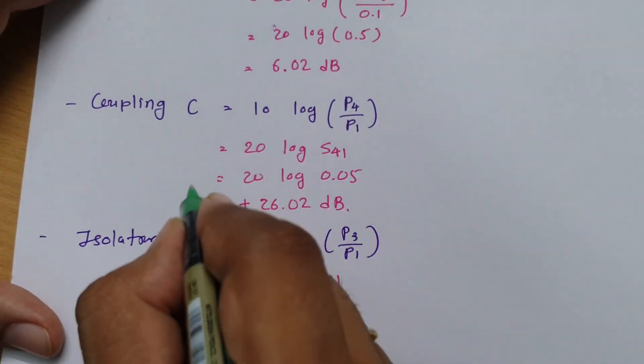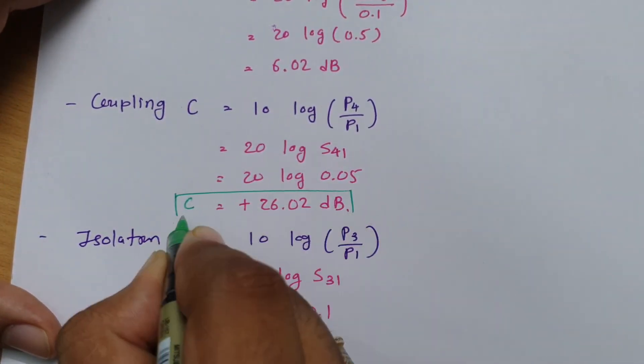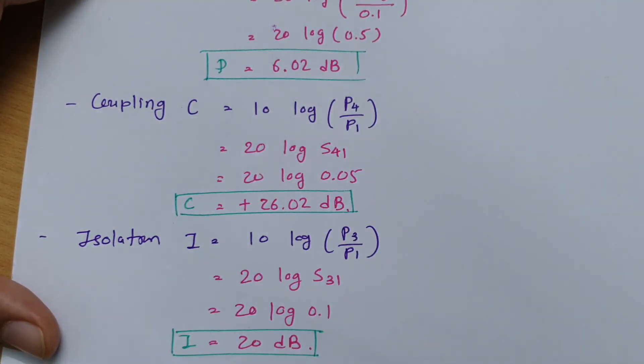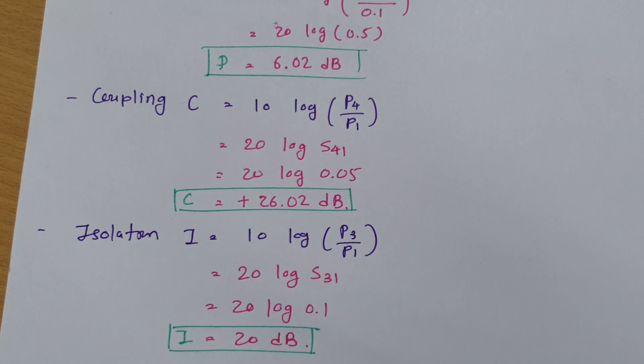So my isolation is 20 dB, my coupling is 26 dB, and directivity is 6 dB. This is how we can solve problems based on directional coupler. You just see the minor details which I have explained here, as they are very important. You should solve examples. I hope that you have understood this session. Thank you so much for watching this video. Please give your valuable suggestions. Definitely based on them, I will make videos which will solve all those queries required on my channel. Thank you so much.